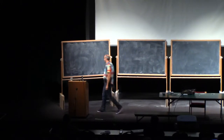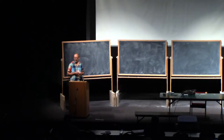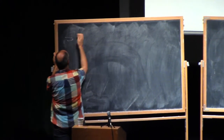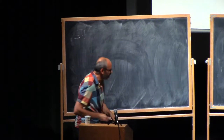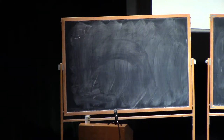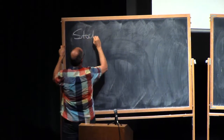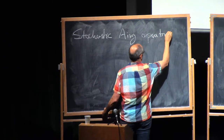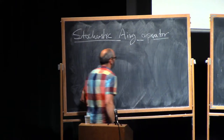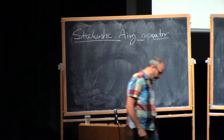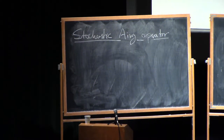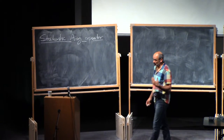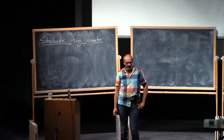Hi everybody. We're going to continue a series of lectures on beta ensembles, and the goal today is to continue the study of the stochastic Airy operator. What we discussed last time is that when we look at the tridiagonal ensemble for the beta ensembles, it looks like some random operator, and it actually converges in a certain sense to a limiting random operator, which is a differential operator.